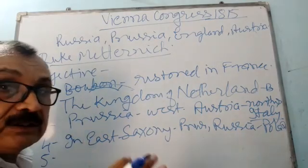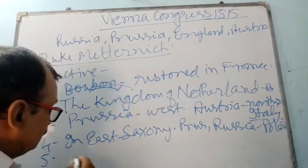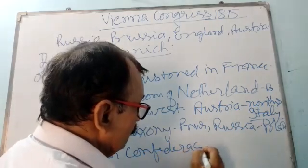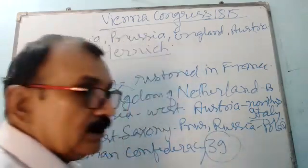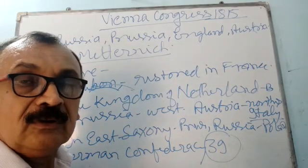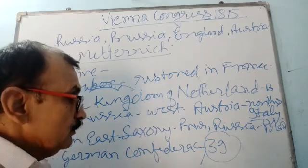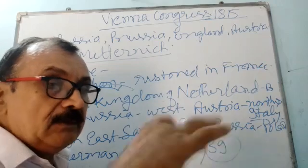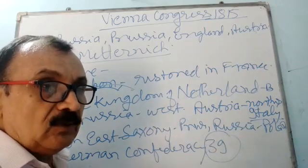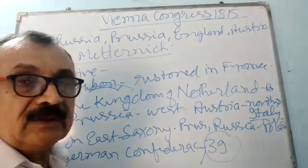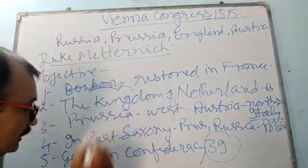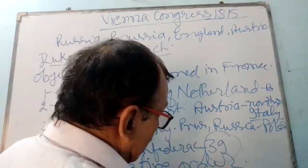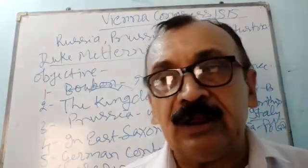However, although all these changes of Napoleon were undone, the German Confederacy of 39 states which Napoleon had created was left untouched and was not removed. The objective of the delegates was also to bring back all those old dynasties which were deposed by Napoleon during its expansion. In this way, the delegates wanted to establish a conservative order in Europe, and that was their main purpose.